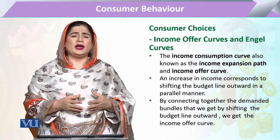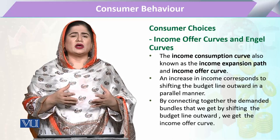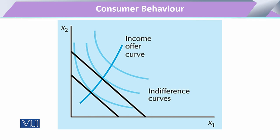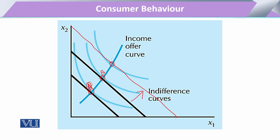This income consumption curve expresses the expansion of commodities' consumption with respect to income, so it is also called the income offer curve or the income expansion path. In the diagram, there are various levels of indifference curves. When one budget line gives optimal choice bundle at point A, with the increase in income there can be optimal point B, and with a further shift in income to the right there can be another optimal bundle C. Joining these optimal choice bundles gives us the income offer curve.